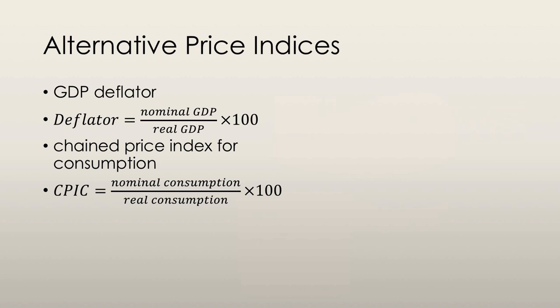The next alternative price index is called the chained price index for consumption, or CPIC. It's calculated as nominal consumption expenditure divided by real consumption expenditure multiplied by 100. The CPIC is an index of all the prices of items included in consumption expenditure only in GDP. Because it uses current and previous period quantities, it incorporates the substitution bias and new goods bias, overcoming the problems faced by the original CPI.